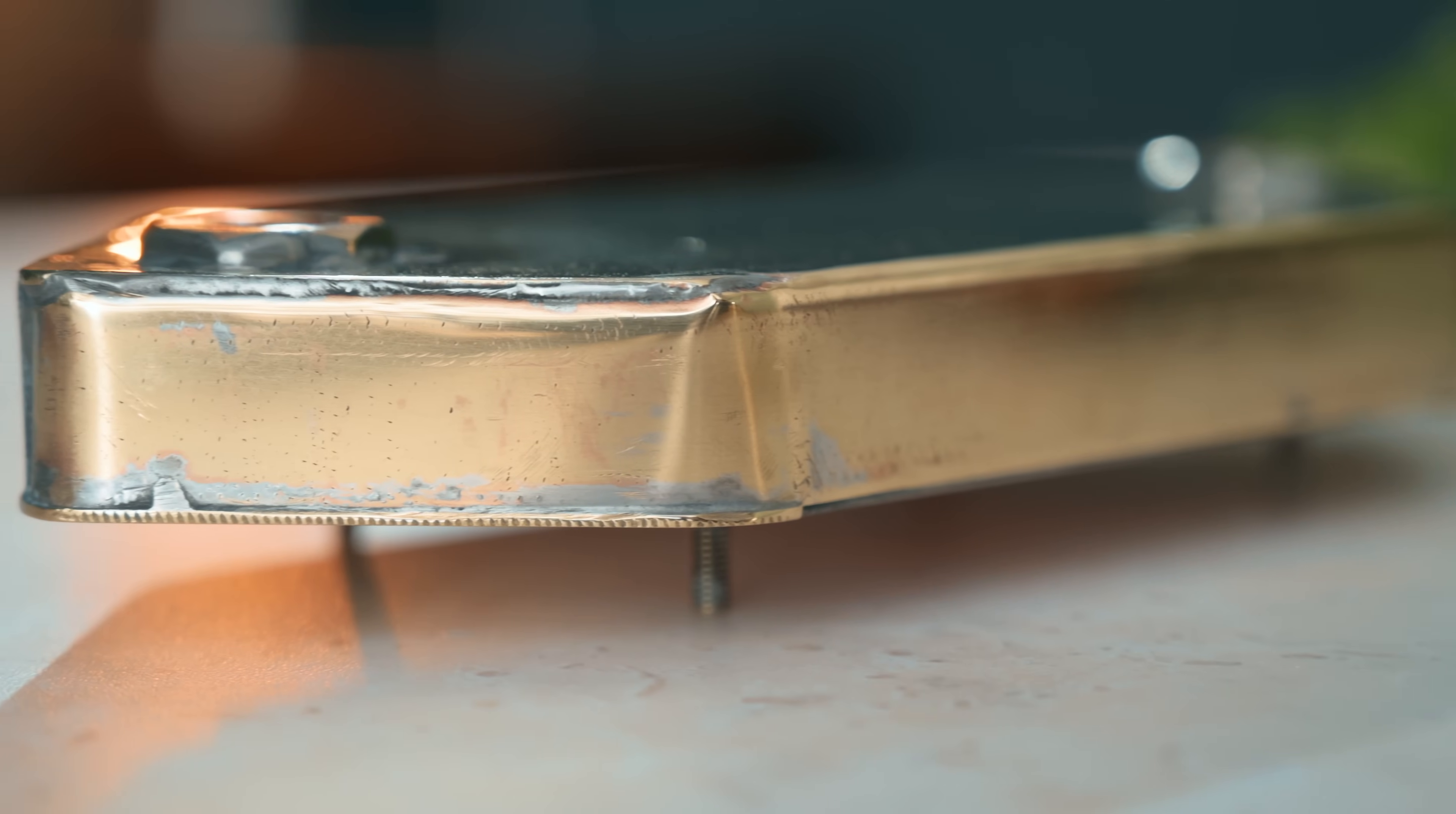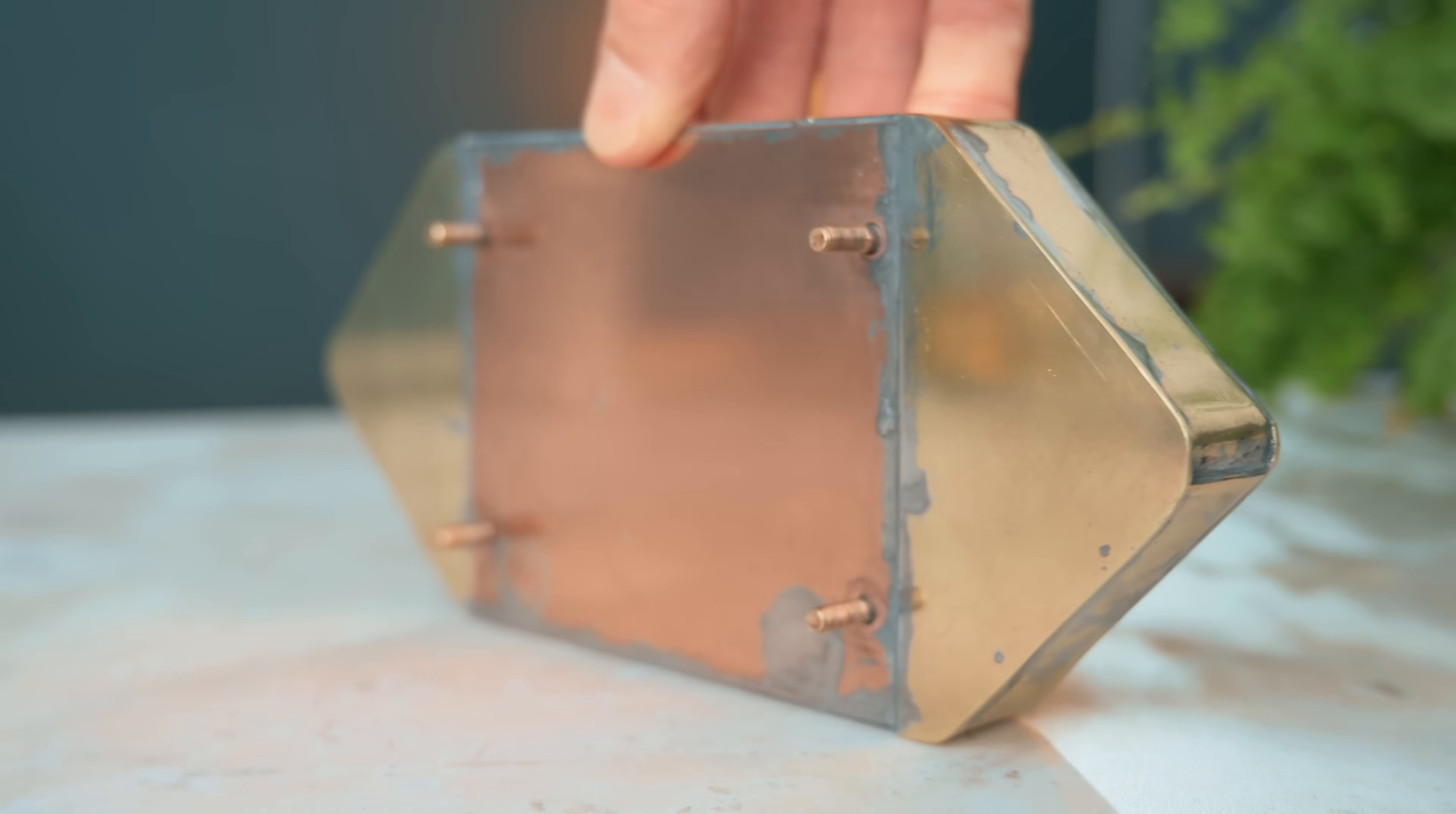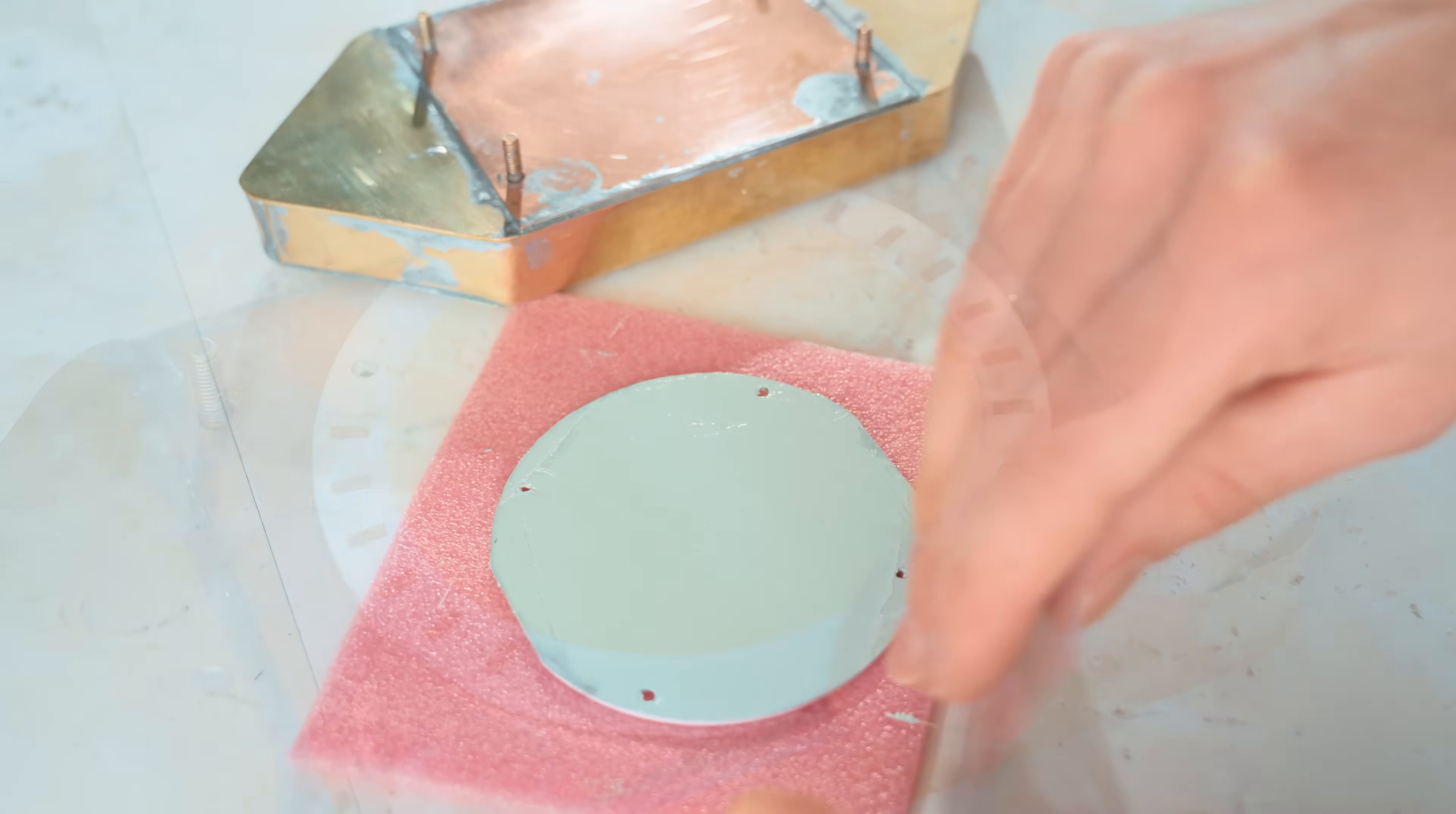As far as I can tell the solder joints seem to be making a good seal, so so far so good. Before mounting the LED to this block though, it's important to add a thin layer of thermal compound to aid in heat transfer between the LED's base and the block.